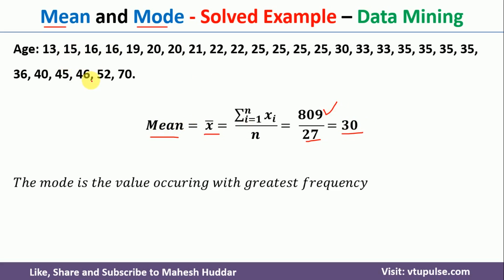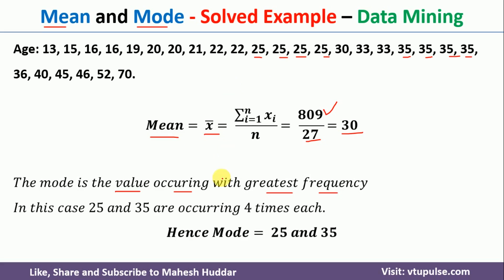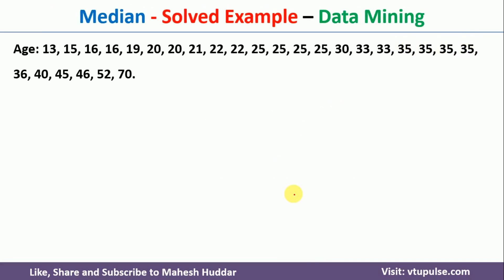Now coming back to mode. If you want to find the mode, we need to identify a value which is occurring with the greatest frequency. Looking at this data, the value 25 is occurring 4 times, and similarly 35 is also occurring 4 times. So 25 and 35 are occurring the greatest number of times, meaning the mode is equivalent to 25 and 35. If, for example, 25 were coming 5 times or 35 were coming 7 times, whichever has the greatest frequency would become the mode.